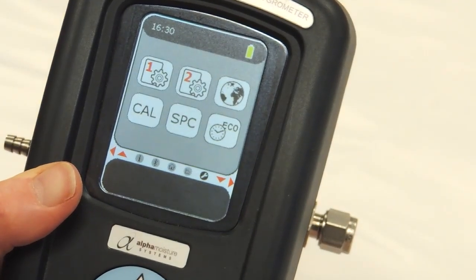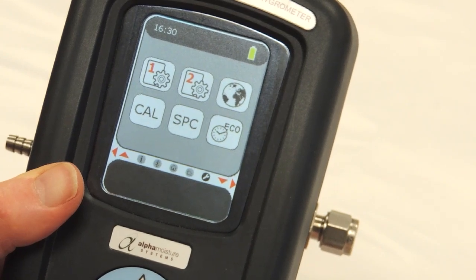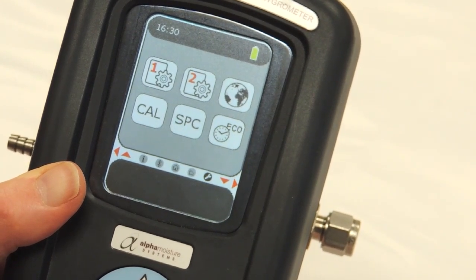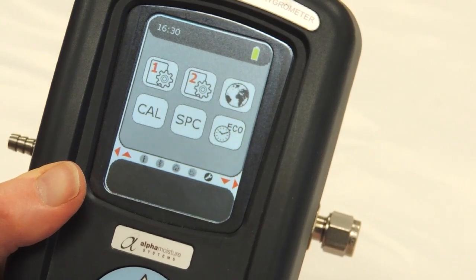Press again and we come through to a settings screen which allows you to change the units on the dew point scale to degrees F or to acquire a calculated pressure dew point. There's also the AutoCal option on this screen and other information.